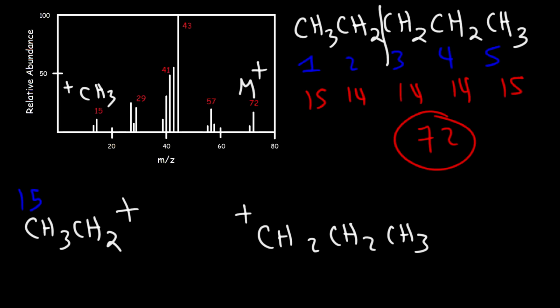Anytime you see a CH3 group it has a weight of 15 and the CH2 group has a weight of 14. So the ethyl cation has a weight of 29, which corresponds to the peak that we see here. As for the propyl cation, if you add 14, 14, and 15 that will give you a total of 43, or you could do 72 minus 29 and that will give you 43. So the propyl cation corresponds to the base peak.